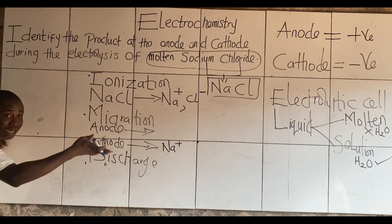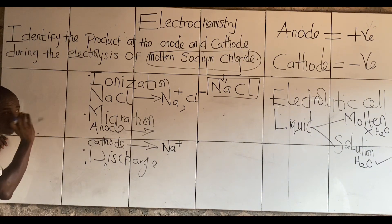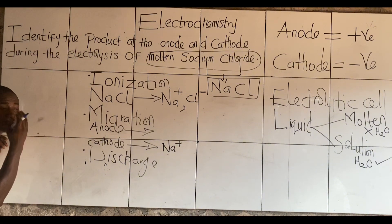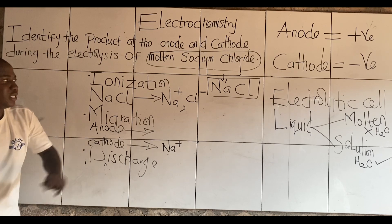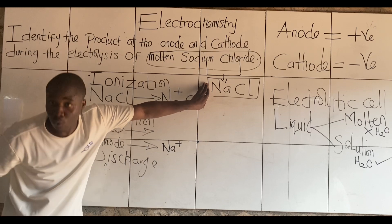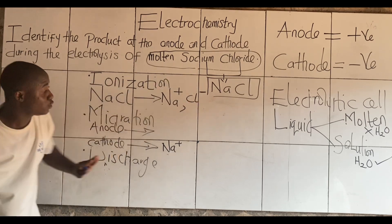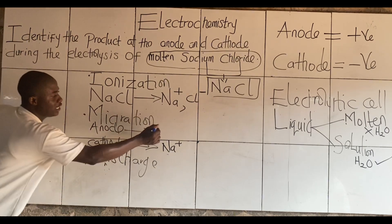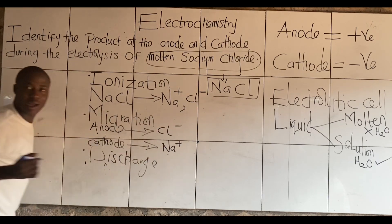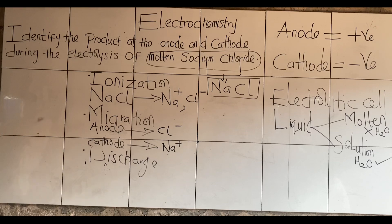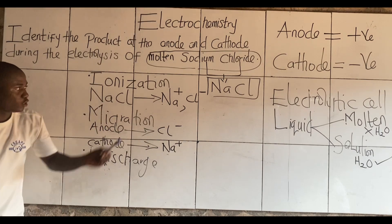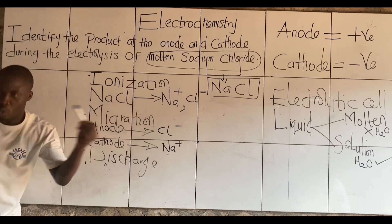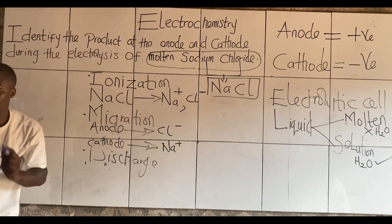So automatically, chloride — when chlorine has a charge, the name changes to chloride. But without this charge, it is called chlorine. So chloride is minus, and anode is positive — they will come together. We have successfully explained migration. Last step — what is it called? Discharge.